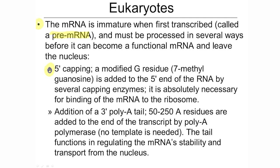They call it a cap. A modified G residue, technically called 7-methylguanosine — so it's a G with an addition you won't see in any other place — has to be added to the 5' end of the RNA by a capping enzyme. It's absolutely necessary for binding of the mRNA to the ribosome, and if there's any mutation that affects relevant capping enzymes, it's usually a lethal problem.